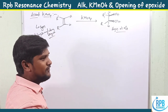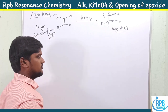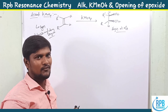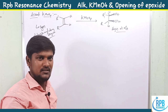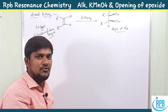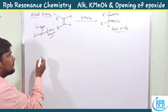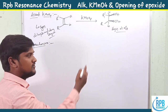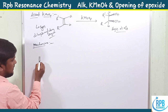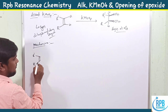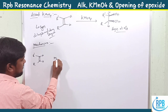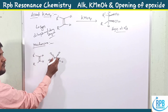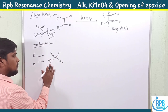Now let us discuss the mechanism of how KMnO4 converts alkenes to diols. Here we have an alkene with substituents R and R'. KMnO4 has the structure O⁻ with double bond oxygens around manganese, with K⁺. The O⁻ from KMnO4 attacks the olefin.